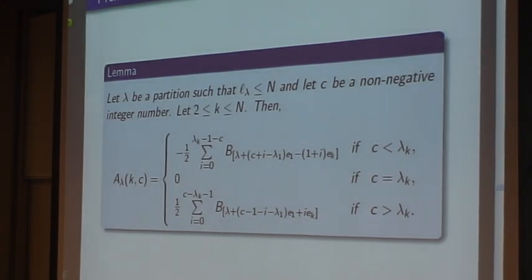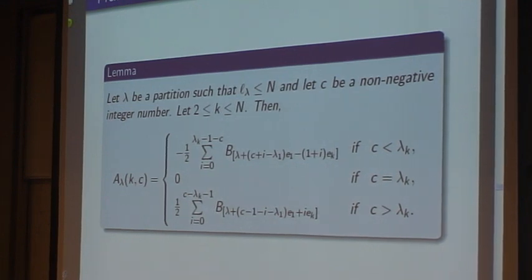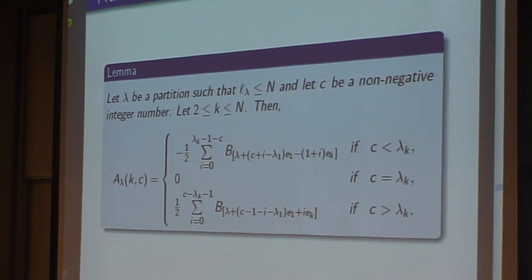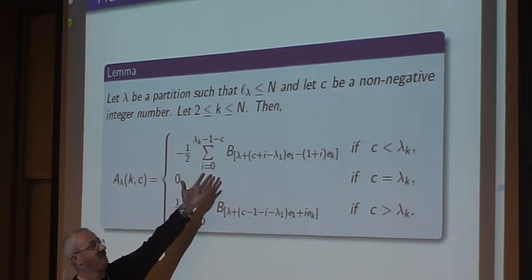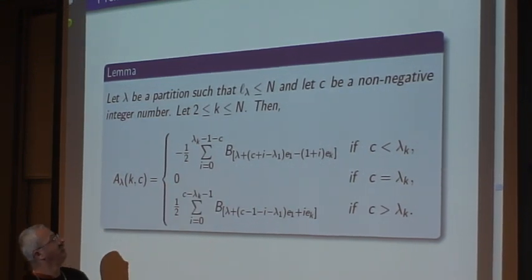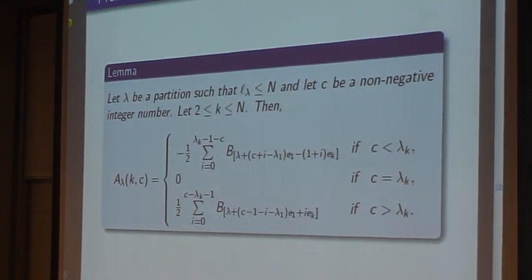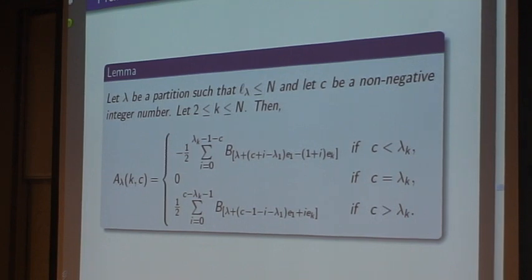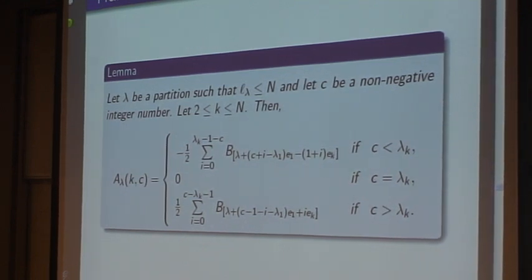So here is the first lemma. I have three integrals, I want connection between these three integrals. So the first one, A_λ(k,c) depends in terms of B and if c equals λ_k. So the second lemma, we have inches, then graph inches, and get zero. How can we prove this one?